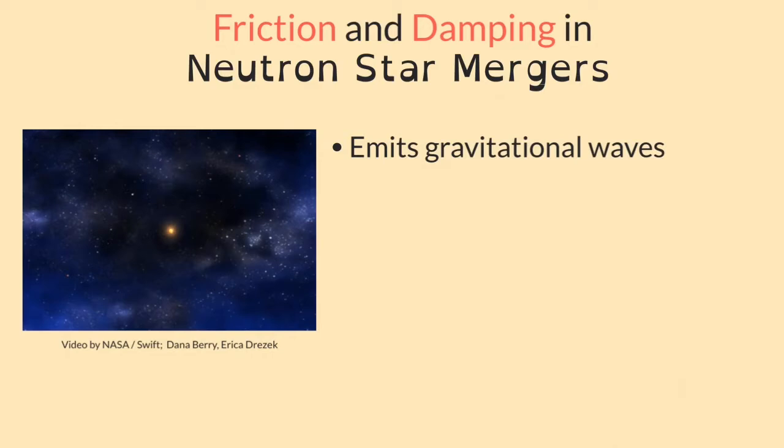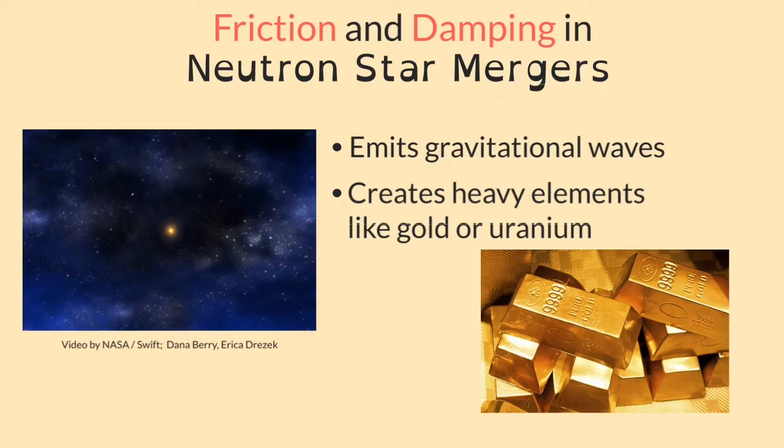Other scientists are interested in them because, although neutron star mergers are very rare, it now looks like they are the original source that produced most of the heavy elements like gold or uranium that we find on Earth.